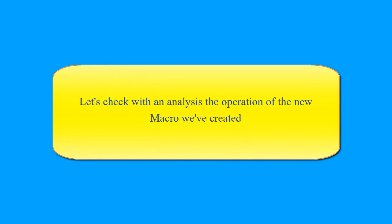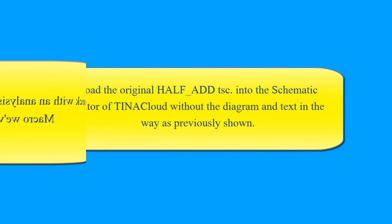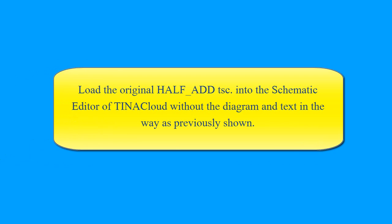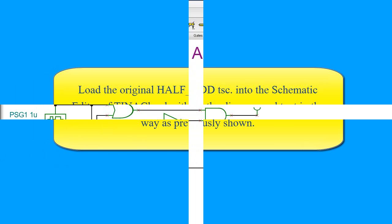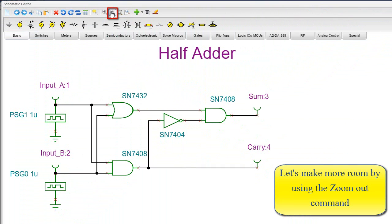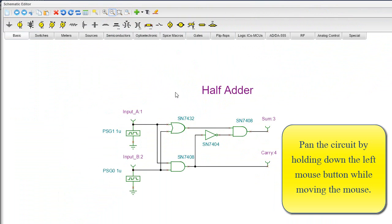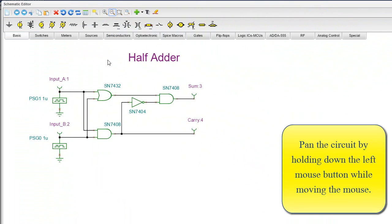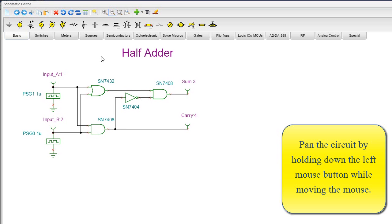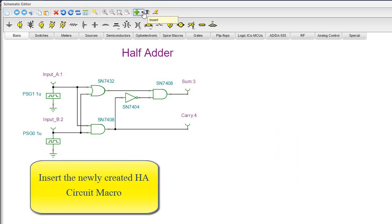Let's check with an analysis the operation of the new macro we've created. Load the original HALF underscore ADD TSC into the schematic editor of Tina Cloud, without the diagram and text, in the way as previously shown. Let's make more room by using the zoom out command. Pan the circuit by holding down the left mouse button while moving the mouse.